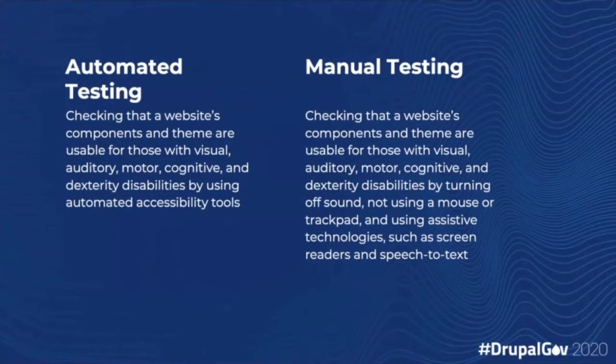For manual testing, notice it's the same premise — we're checking your website's components and theme — but in this case we're not just using a tool. We are turning off sound to check audio descriptions, making sure there are captions, checking that everything is keyboard accessible, and using assistive technology. That could be a screen reader or something like speech-to-text like Dragon. It's really making sure that you're running a lot more testing on your own and not just relying on something else to help you.